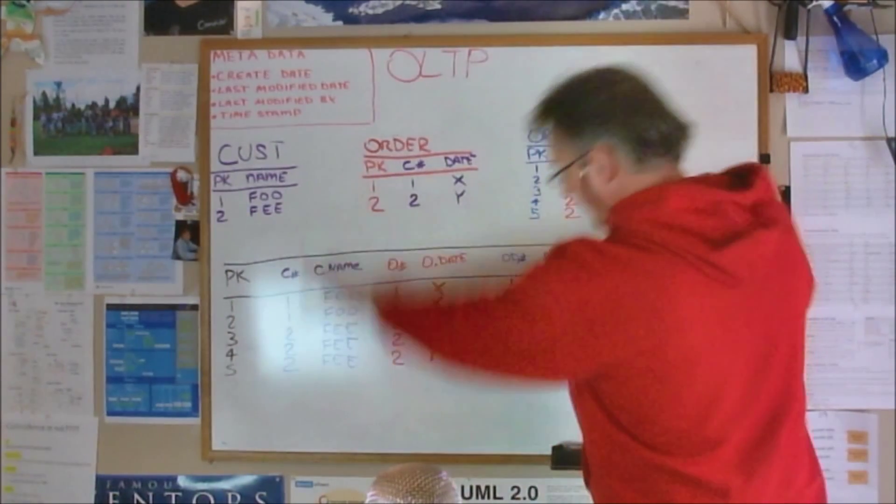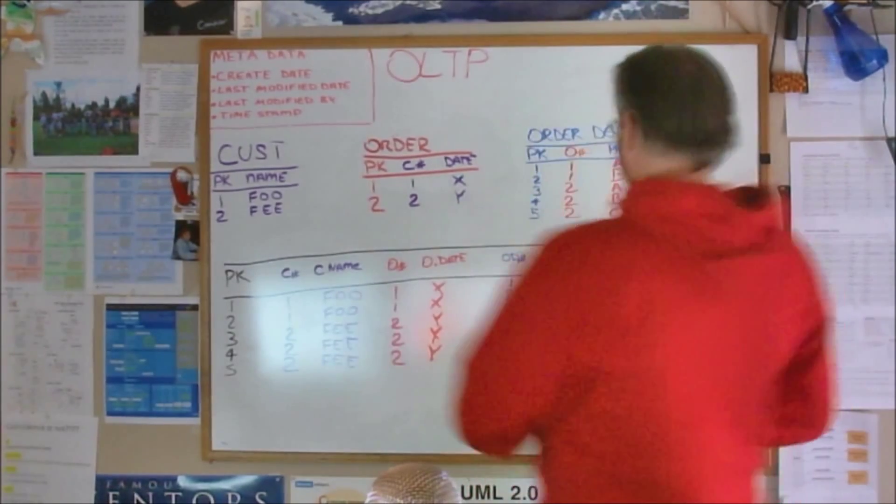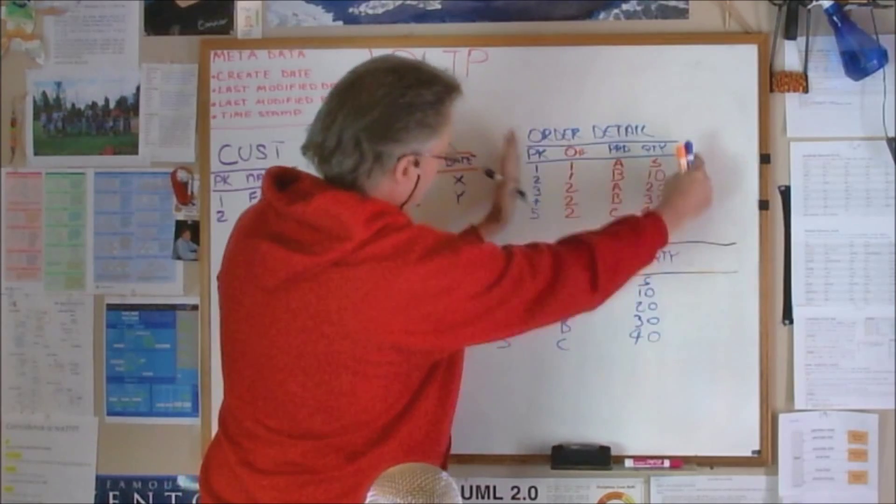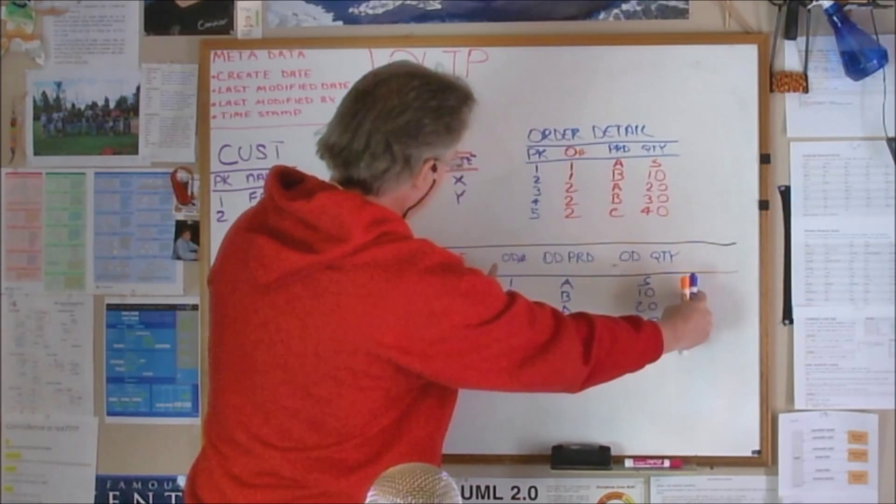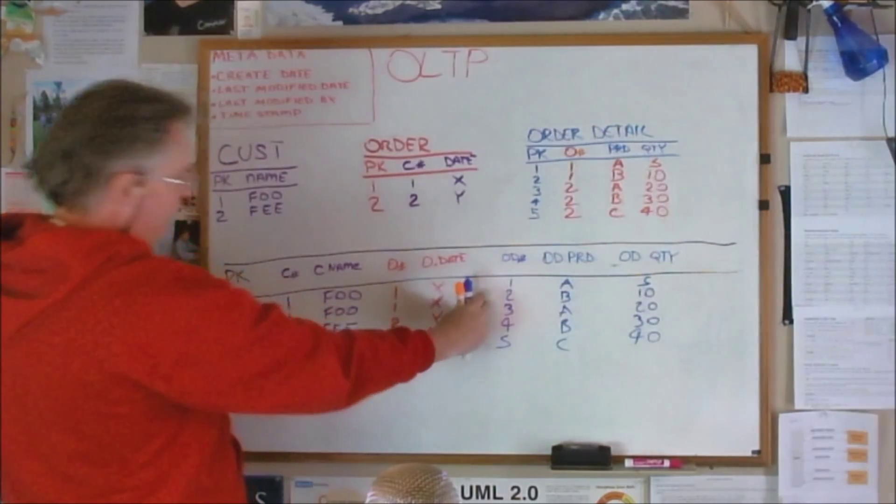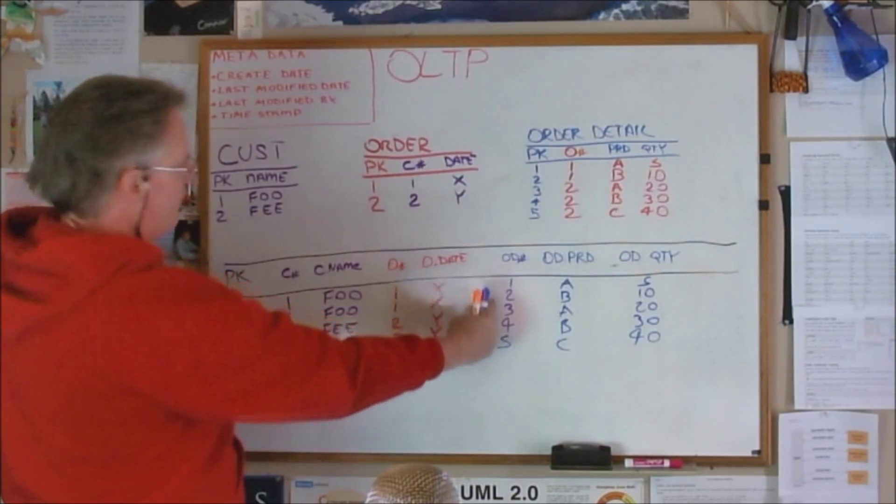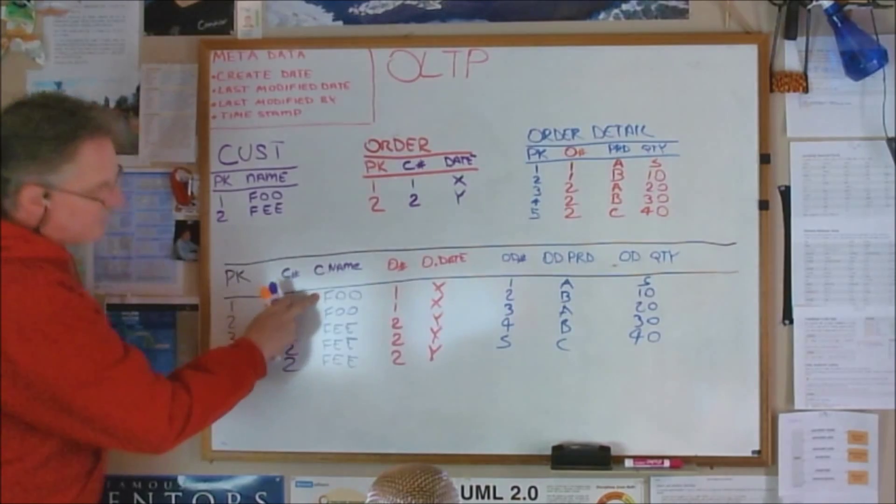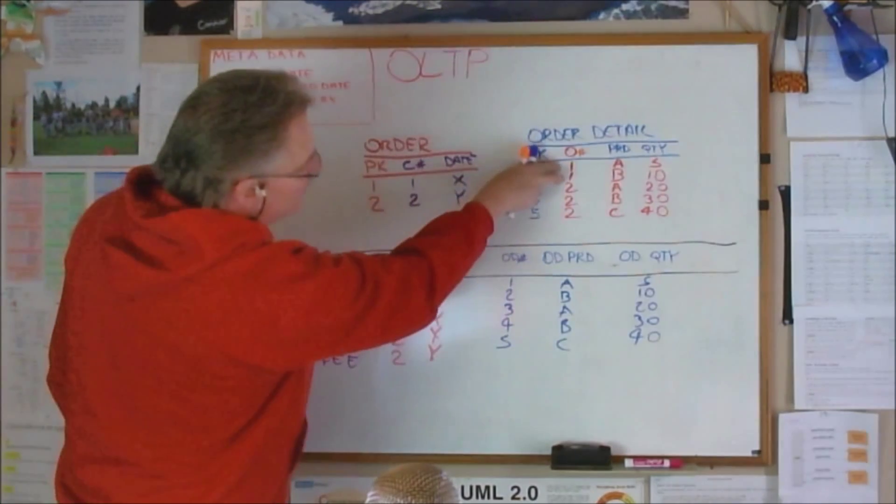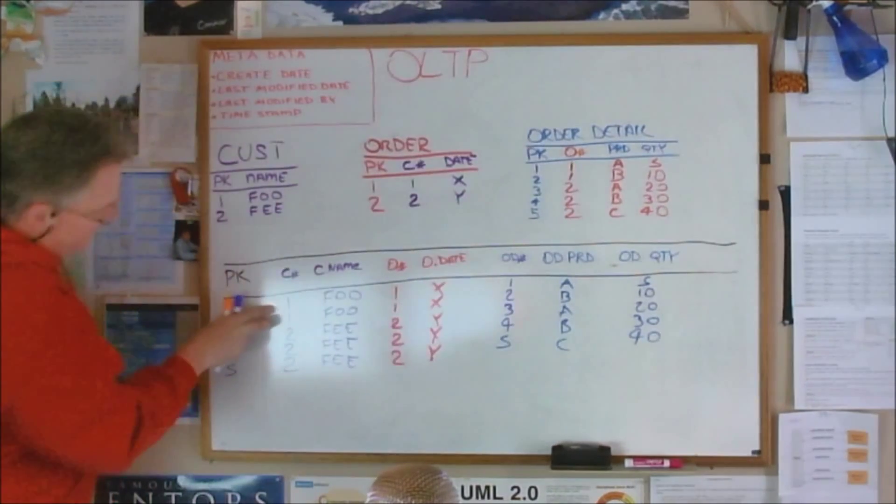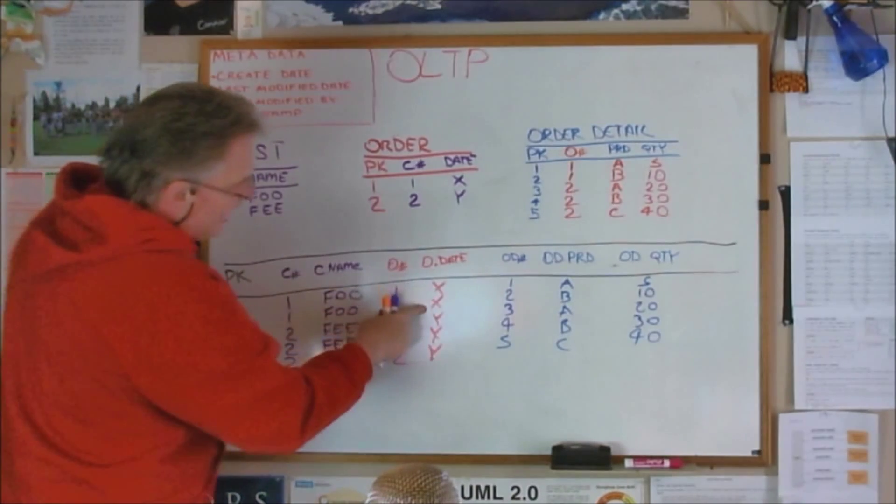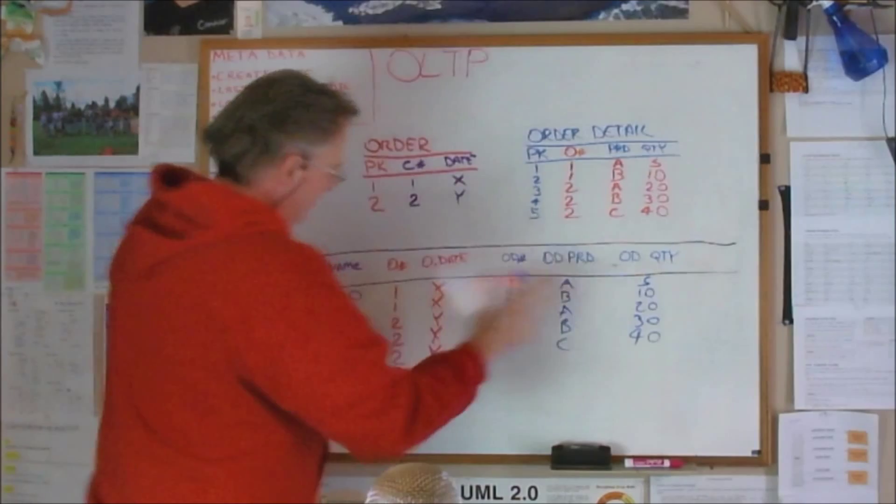Now look at the lower stuff, because you've taken this which is right here and you've denormalized it. You've got to fill in all this stuff with redundant crap. Now you've got the customer number twice because he's got two order details. So now you've got one, one, foo, foo, one, one, X, X. That's horrible.